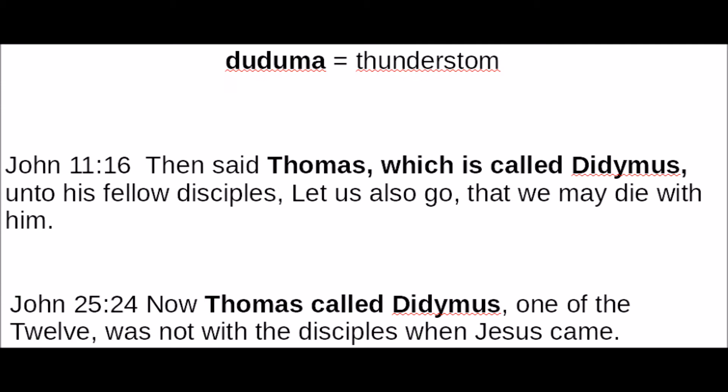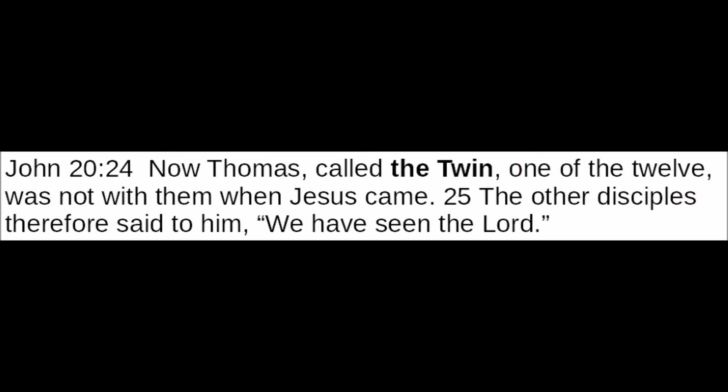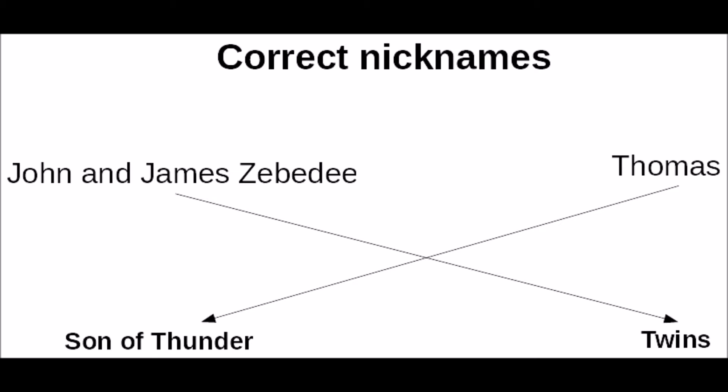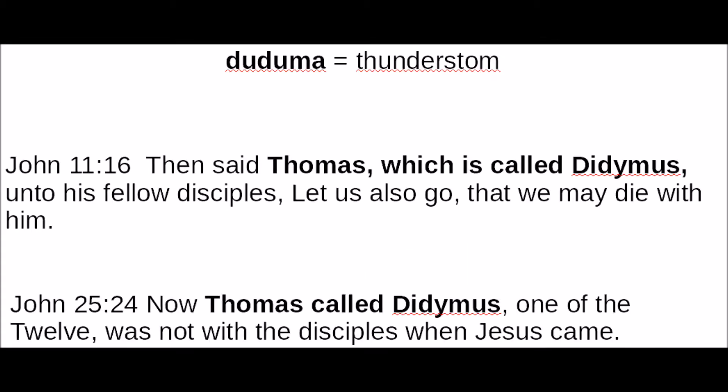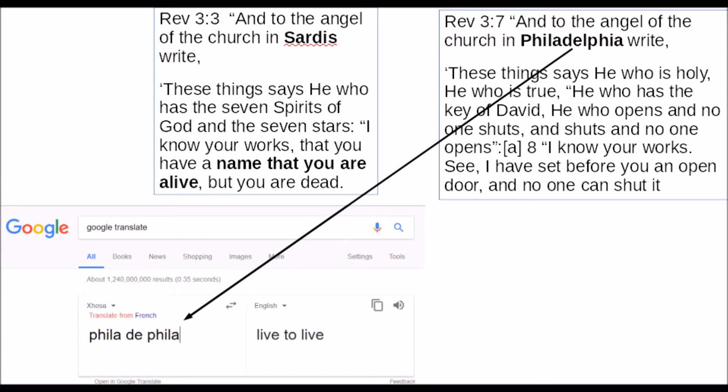Thomas is called Diduma — how does that work? Thomas was called 'twin,' but whoever was translating twisted it. Instead of calling Thomas the son of thunder, he called him twin — even though Thomas didn't even have a brother. How is he called twin? John and James are the ones that should have been called twins, but Thomas is called Diduma. Whoever was translating the Bible didn't understand the language, or deliberately twisted it.